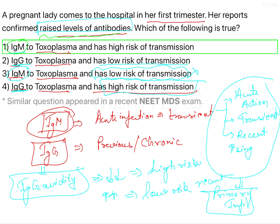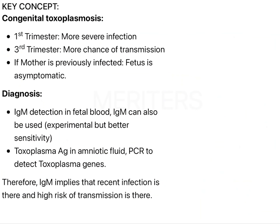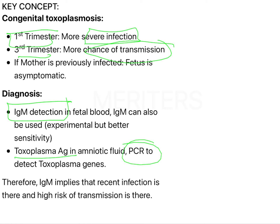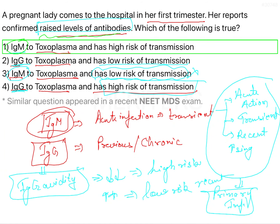So the answer to this question, without any doubt, should be IgM to toxoplasma with high risk of transmission. Quickly walking through the key concept: the first trimester has more severe infection, while the third trimester has more chances of transmission — that is a different case. Regarding diagnosis, IgM detection in fetal blood can also be used because it has very good sensitivity. If IgM is found, that means it is an acute, recent infection with a high transmission rate. You can also use toxoplasma antigen in amniotic fluid or PCR to detect the toxoplasma gene. Coming back to the question, answer 1 — IgM to toxoplasma with a high risk of transmission from mother to child — is the correct answer.